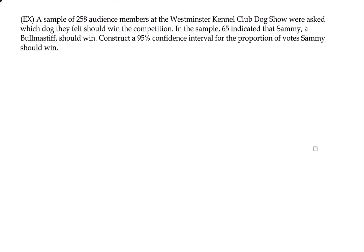So let's go ahead and take a look at an example. So a sample of 258 audience members at the Westminster Kennel Club dog show were asked which dog they felt should win the competition. In the sample, 65 indicated that Sammy, a bull mastiff, should win. Construct a 95% confidence interval for the proportion of votes Sammy should win. Okay, so first off, notice that we are being asked to construct a confidence interval. But this time is for a proportion. So it doesn't really change much. It just changes how we go about finding our margin of error. It's just a different formula is all it is.